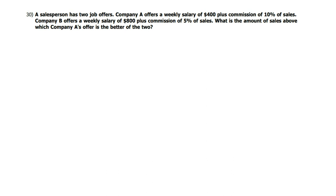All right, this is the last problem. A salesperson has two job offers. Company A offers them a weekly salary of $400, plus they'll pay them commission of 10% of whatever sales they make. Company B also offers them a weekly salary, but it's of $800. And then they also give them an additional commission, but of only 5% of sales.